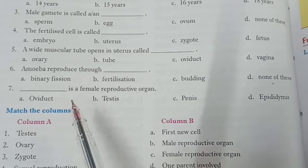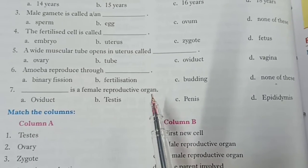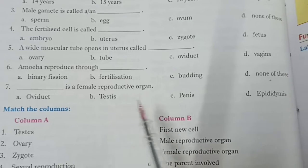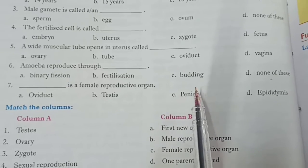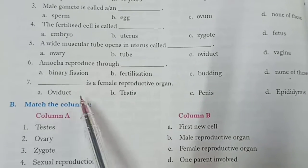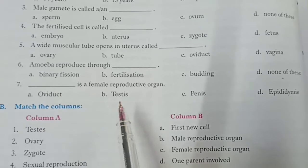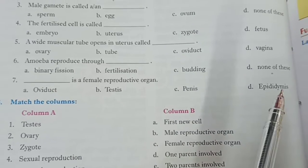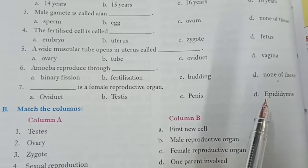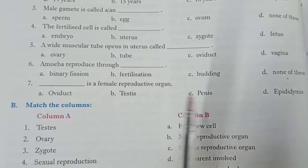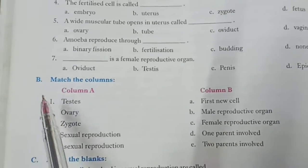Seventh question: which of the following is a female reproductive organ? Answer will be oviduct. The other three organ names given are male reproductive organs.